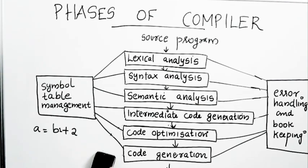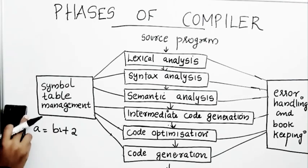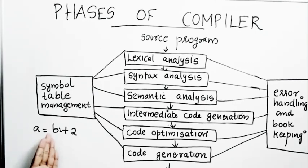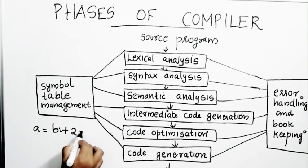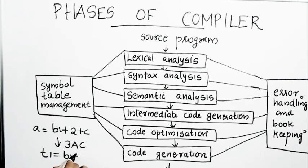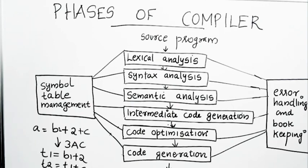In the intermediate code generation phase, the code is converted to a suitable intermediate representation. An example is three-address code, where every expression allows a maximum of three operands. Our statement 'a = b1 + 2' is already valid three-address code. But if we have 'a = b1 + 2 + c', that has four operands, which is not allowed. It must be converted: t1 = b1 + 2, t2 = t1 + c, a = t2.